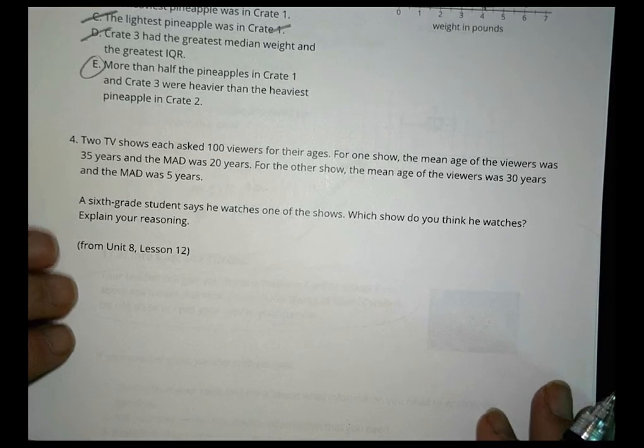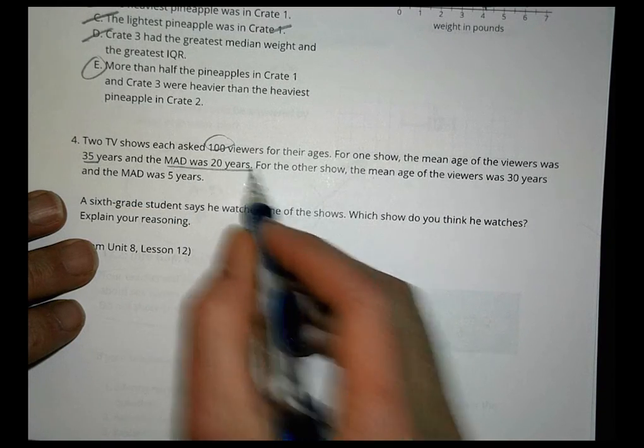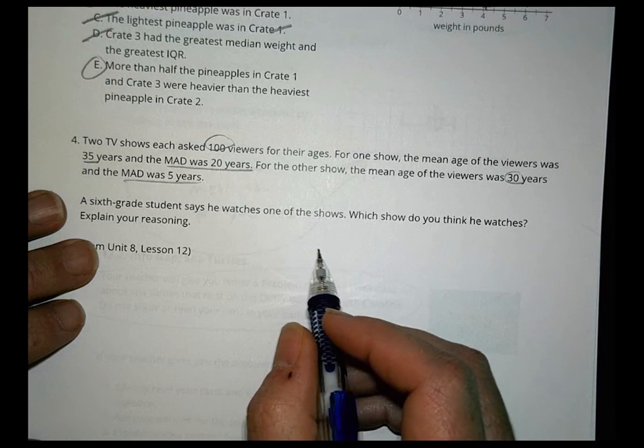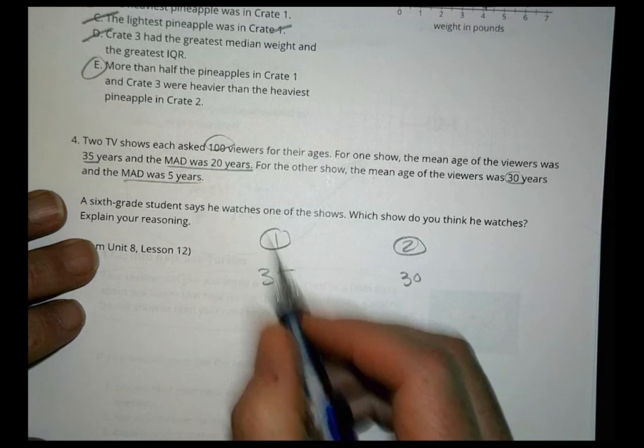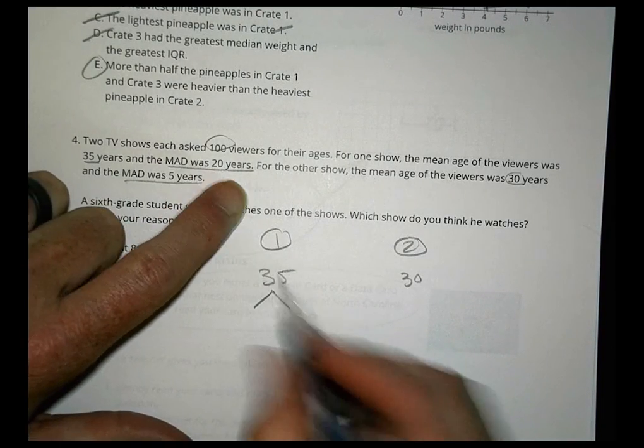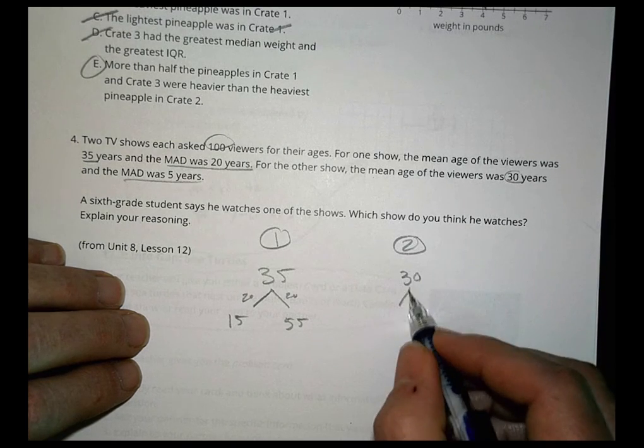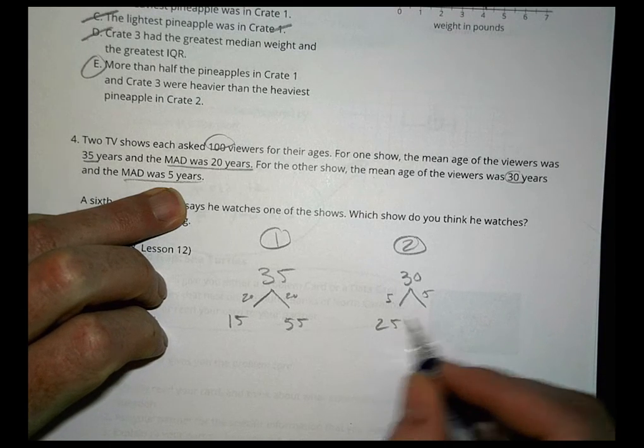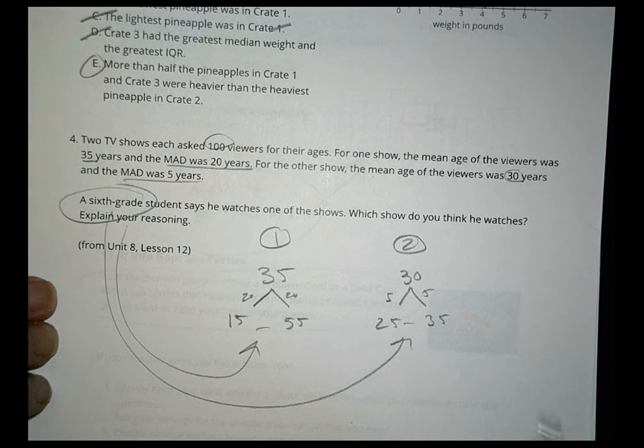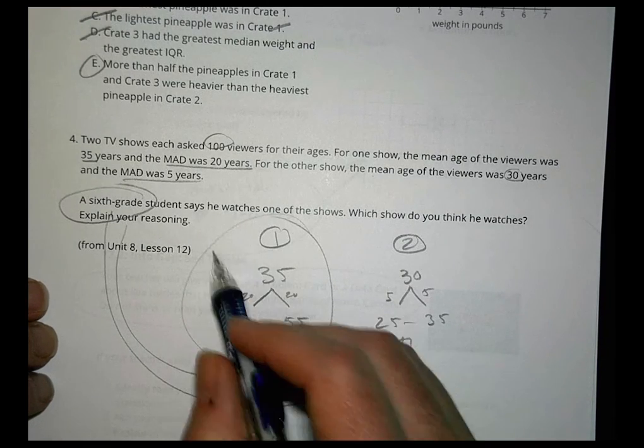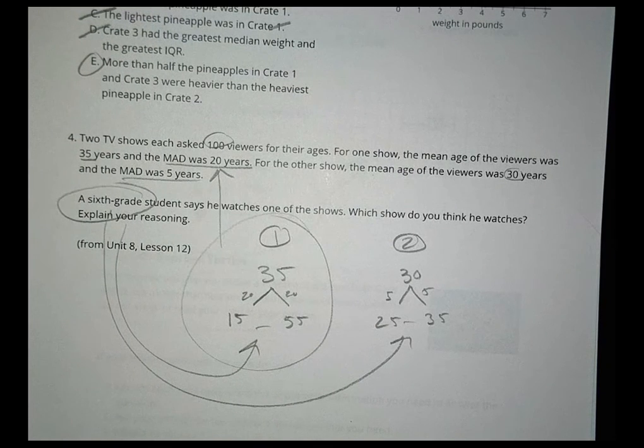And finally, number two. Two TV shows each asked 100 viewers for their ages. For one show, the mean age of the viewers was 35 years old. And the mean absolute deviation was 20. For the other, the mean was 30. And the mean absolute deviation was five years. So, for show one, you had an average age of 35. For show two, an average age of 30. But that mean absolute deviation meant that it can be 20 years less, 20 years more on average. So, if we take away 20 and add 20, we're going to be at 15 or we'll be at 55. And if we take away over here, mean absolute deviation of five, we're going to be 25 years to 35 years. So, a sixth grade student is going to fall in which one of these categories? The 25 to 35 range or the 15 to 55 range? Probably a little closer to this group. And we'd also say most likely because it does have a greater mean absolute deviation, more variability. So, it's more likely he's part of that one there. Alright, that's it for today. Have a great day and we will see you next time.